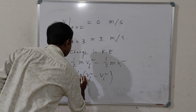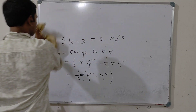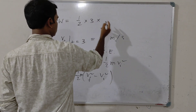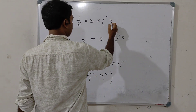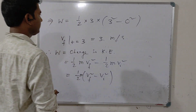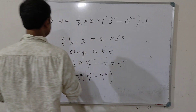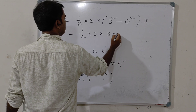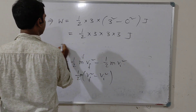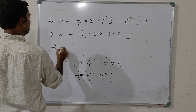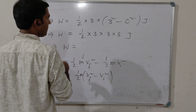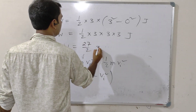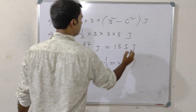So, putting in the values: W is equal to half into 3 into (3 squared minus 0 squared). That gives W equal to half into 3 into 9, which is 27 by 2 Joule, that is 13.5 Joule. This will be the answer.